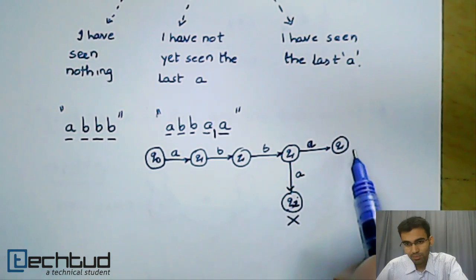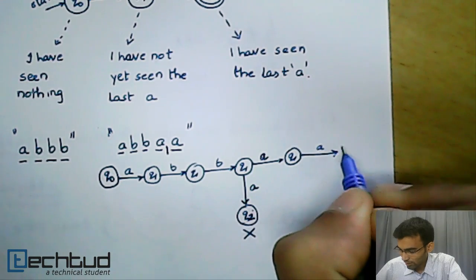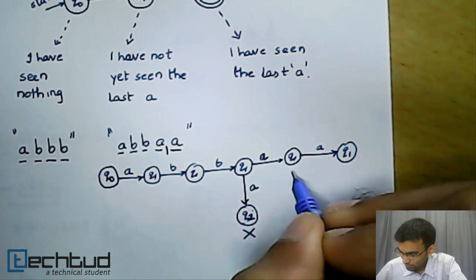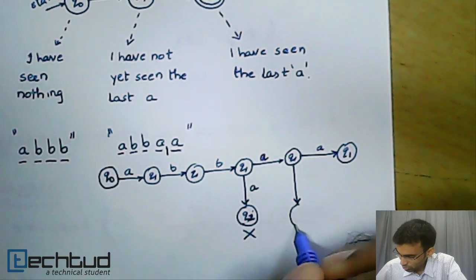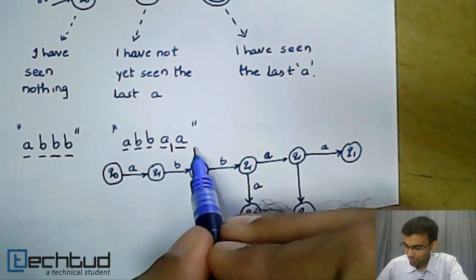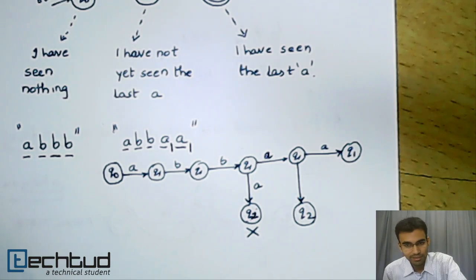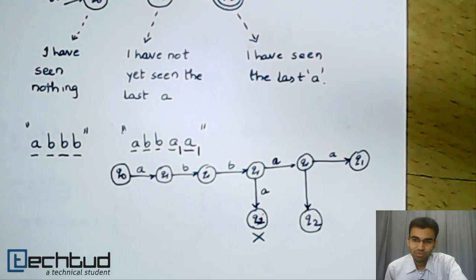However, this branch is yet to be seen. On an A, I can again either stay in Q1 or I can go to Q2. Now, when I check here, I see that my string has completed. Because my string is over, I can be in either Q1 or Q2.